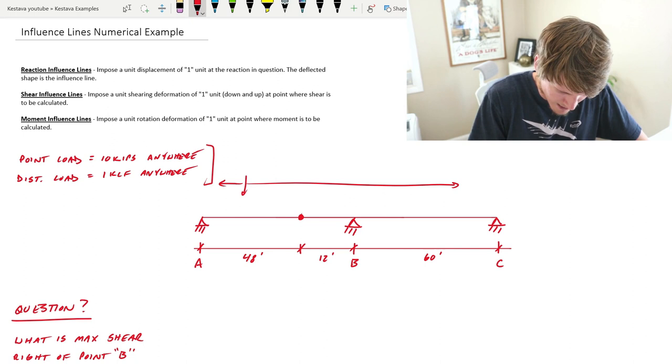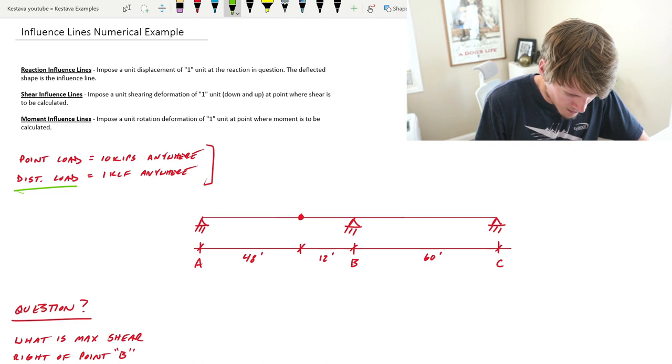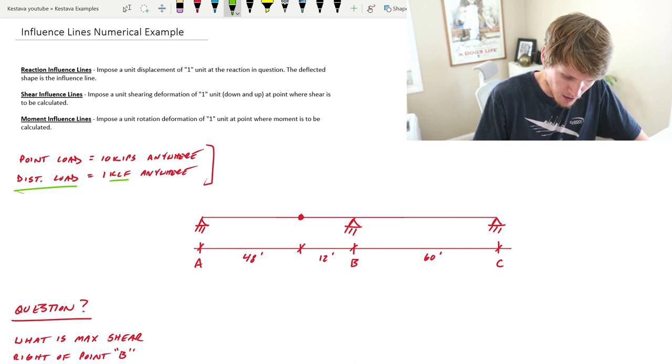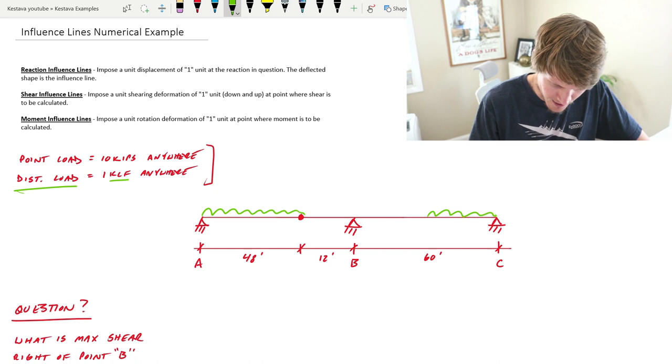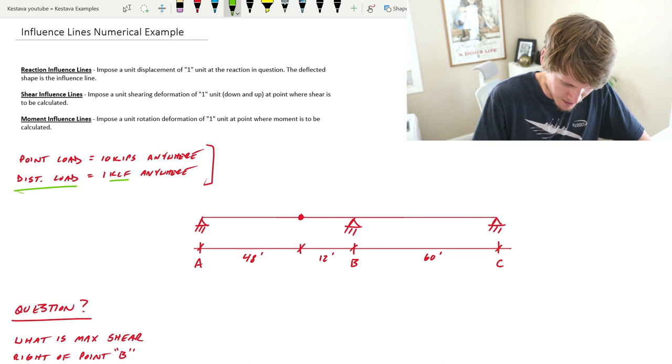Additionally, we have a distributed load of one kip per linear foot (klf) anywhere along this line. So again, you could have distributed load along this portion as well as over here, you could have just over here, you could have just along here, a little bit there.